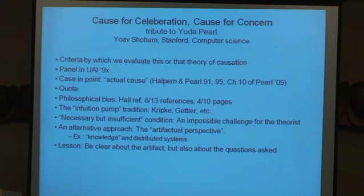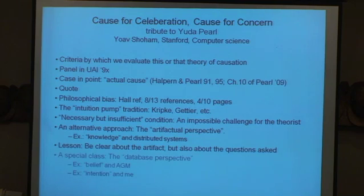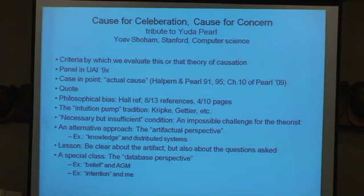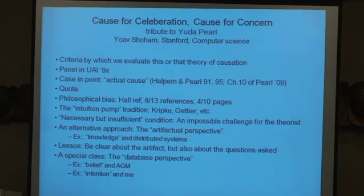Do we have any other examples in computer science? I call this the artifactual perspective — you have an artifact and you're trying to reason about it. A special case is the database perspective, where the artifact involves a database. The well-known example is the AGM theory of belief revision: you have a database that captures your beliefs, but it's not just a dumb database that does store and retrieve — it provides additional services and maintains consistency for you.